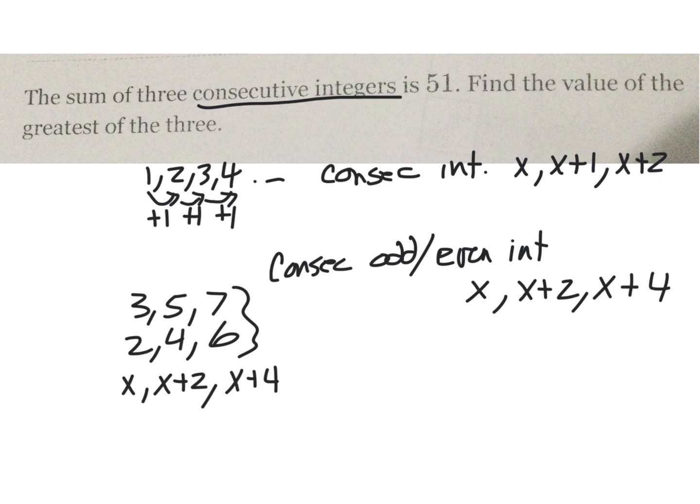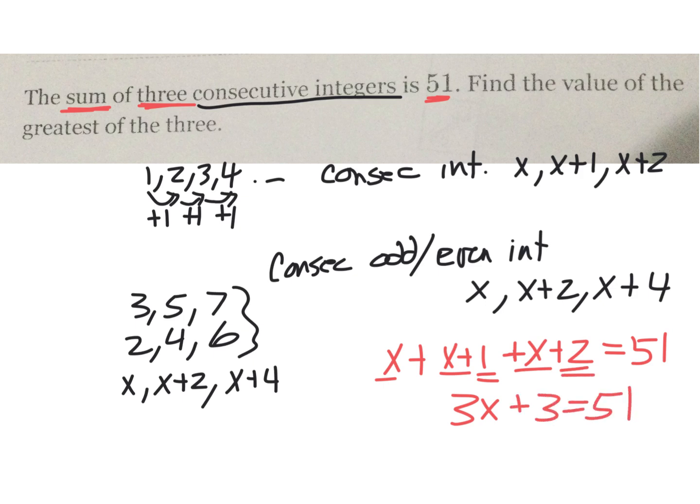For this particular problem, the sum of three consecutive integers is 51. That means I have X plus X plus 1 plus X plus 2, and all that together equals 51. Combine your like terms: 3X plus 3 equals 51, and you get X is 16.